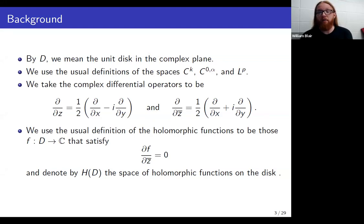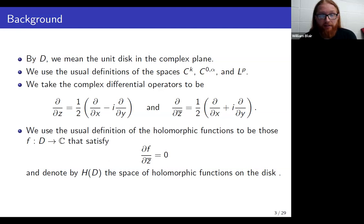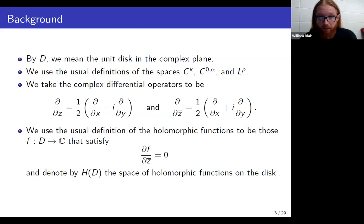We're going to be working in a single complex variable. The differential operators that we need to know about would be partial partial Z and partial partial Z bar. In particular, we're going to be using partial partial Z bar quite a bit. We will use the usual definition that a holomorphic function is a function on the disk that satisfies the Cauchy-Riemann equation, which is that its partial Z bar derivative is equal to zero. We will call the space of holomorphic functions H of B.